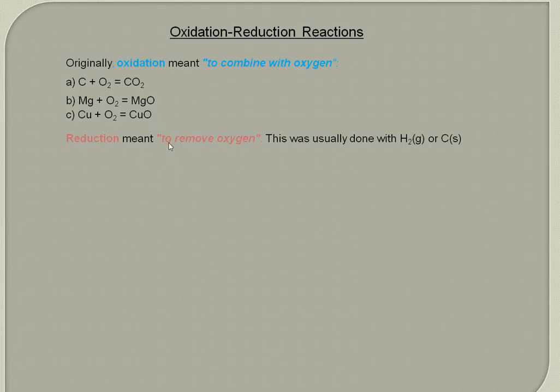Reduction meant to remove oxygen. This was usually done by reacting the substance either with hydrogen gas or with carbon such as charcoal. Example: copper oxide, when it reacts with hydrogen, the hydrogen will remove the oxygen from the copper. And that's what we mean by reduction. Copper oxide has been reduced. The hydrogen having gained oxygen has been oxidized.